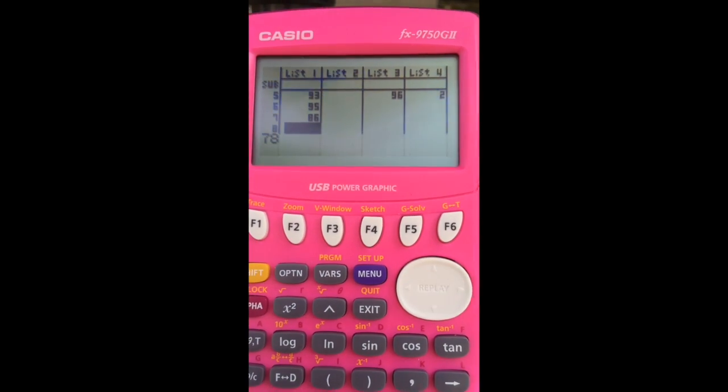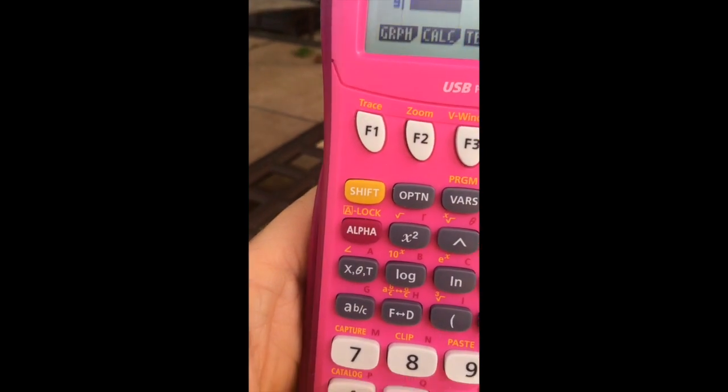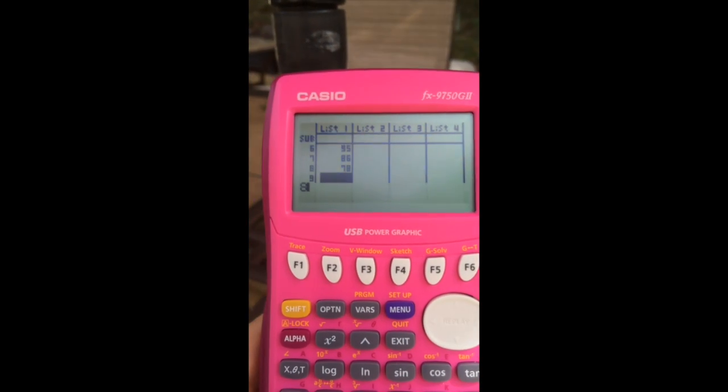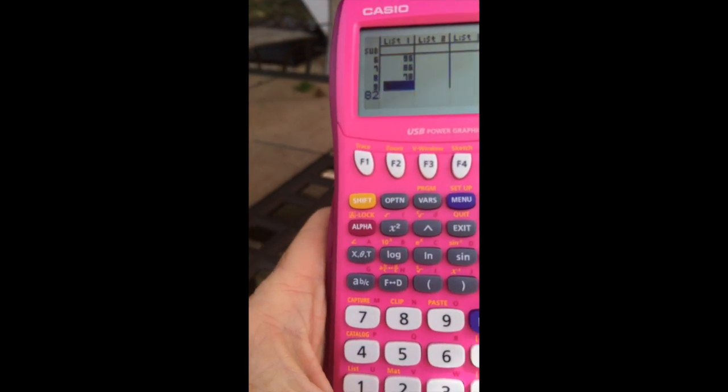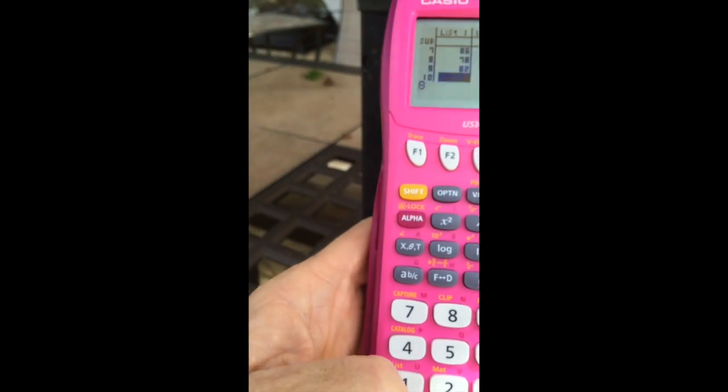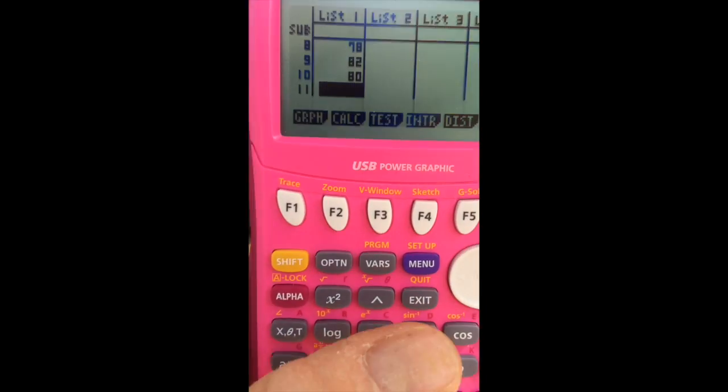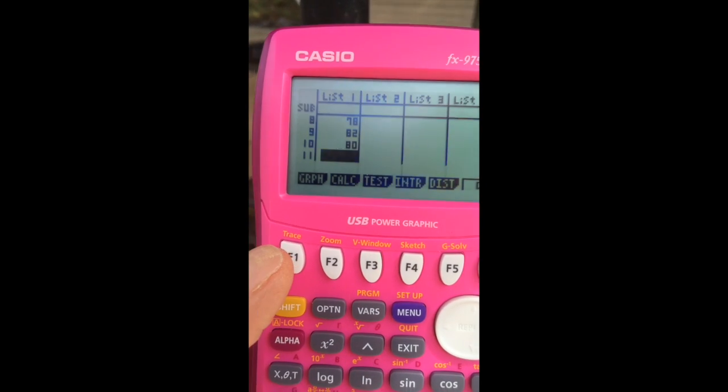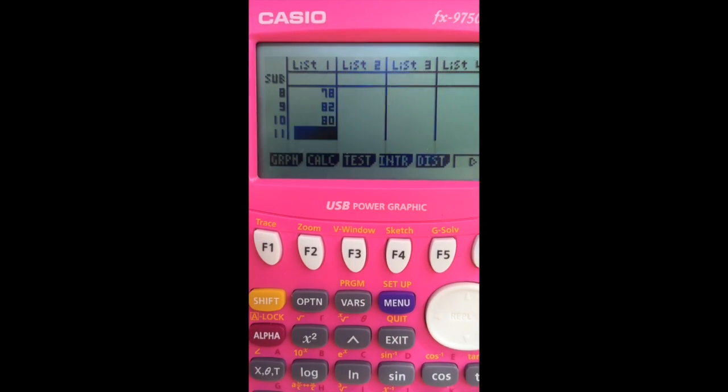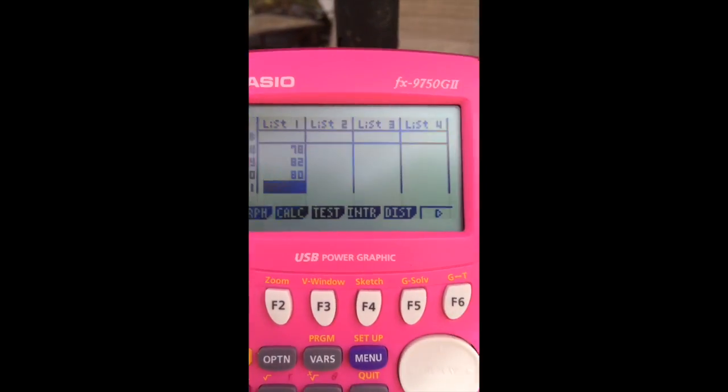78, Execute, 82, Execute, 80, Execute. I've entered 10 numbers, and now I'm going to calculate some statistics.